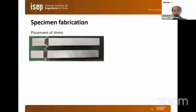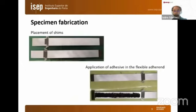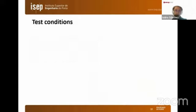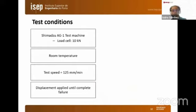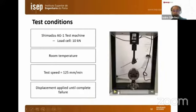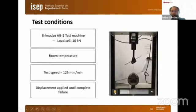The specimens were manufactured following the standard practices for these applications: sanding, bonding, and once the specimens were fabricated, they were left to cure for a week. Then we tested each specimen using a universal testing machine with a 10 kilonewton load cell at room temperature with a testing speed of 125 millimeters per minute, and they were tested until failure, as shown in the video on screen.